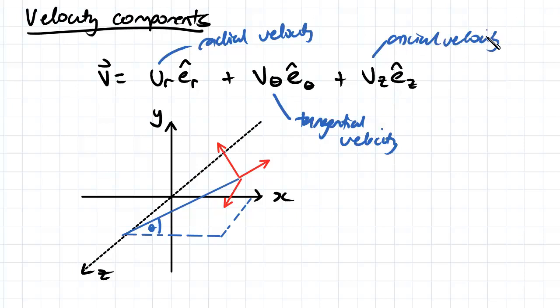And these are multiplied by the unit vectors of theta and z. So you can see this is our coordinate system in the Cartesian plane.